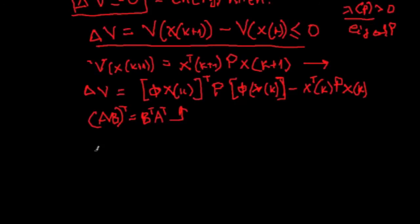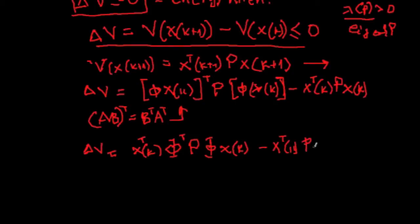Therefore if we use that for this term we obtain that ΔV is x^T(k) Φ^T P Φ x(k) minus x^T(k) P x(k).